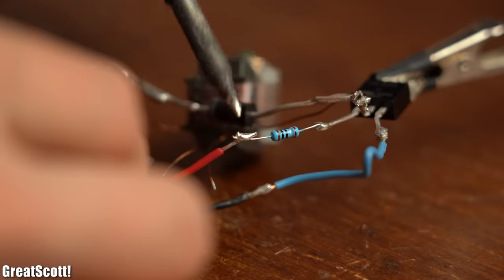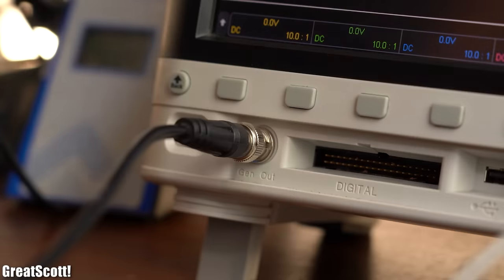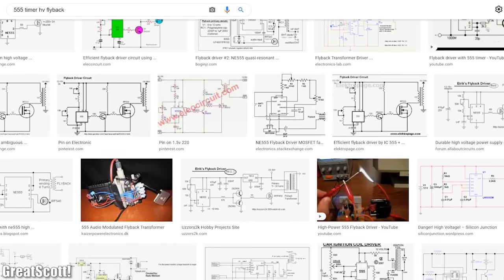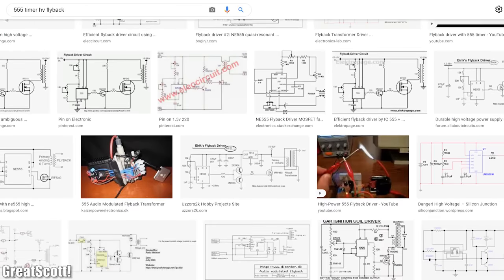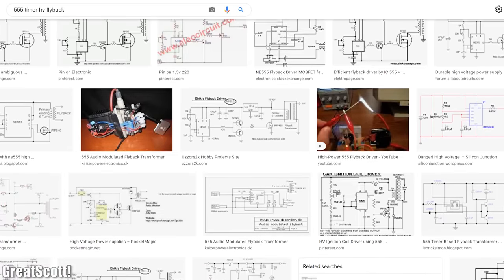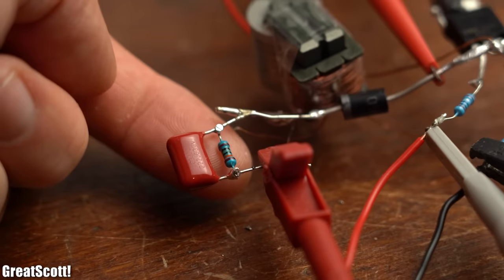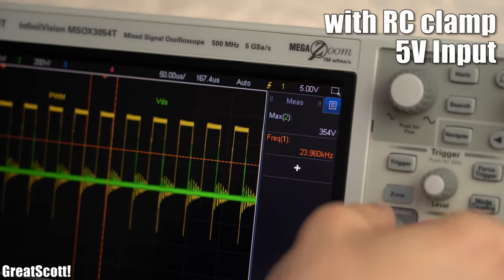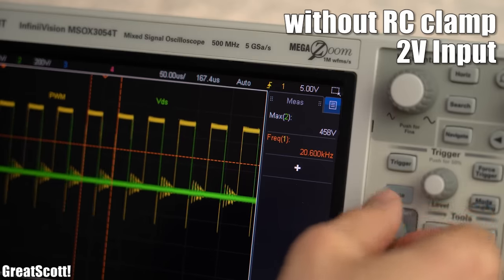I will be using my function generator to control the gate but a basic 555 timer circuit could also easily do this job and even include a bit of audio modulation if you want your arcs to sing. But never forget to add an RC clamp to the mix which limits the voltage spikes across the MOSFET that would otherwise destroy it fairly quickly.